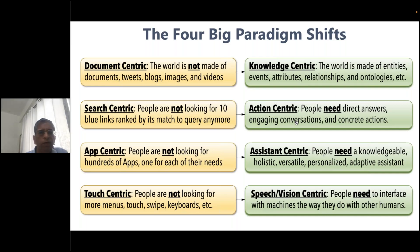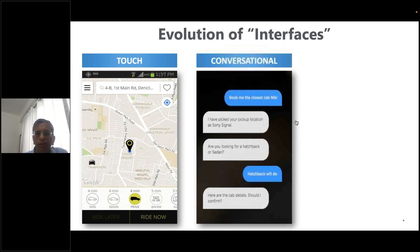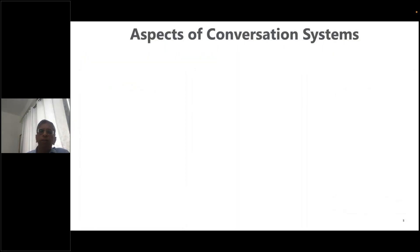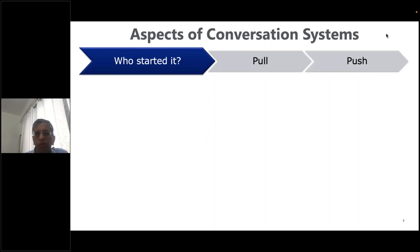These are the contexts in which we'll talk about conversation systems. Interfaces are evolving — we started with touch-based, then conversational, and now speech-based interfaces. This will continue to improve as we build speech systems for all languages, dialects, and accents. Now let me talk about different aspects of a conversation system. The first dimension is who started it — push versus pull: when you get a notification it's a push, when you initiate a conversation it's a pull.